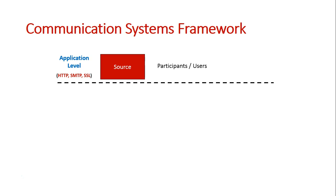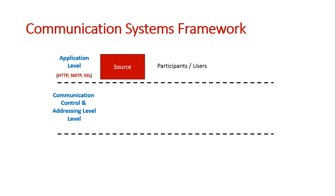Once the message has been created at the source, or originates from the source in the case of a website, it then needs to be encoded for transmission. This is where we go to our next level: the communication control and addressing level. Here the message is encoded for transmission — basically it is turned into packets of data to be sent, broken up into different packets, and given the address of the recipient.